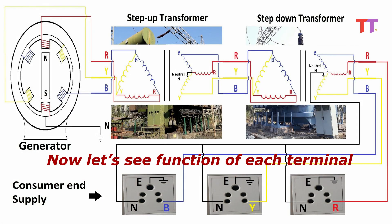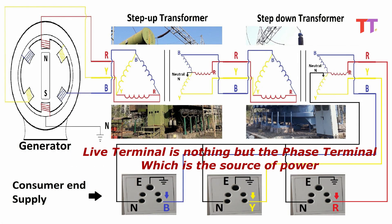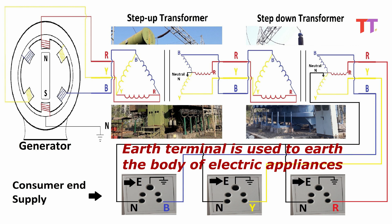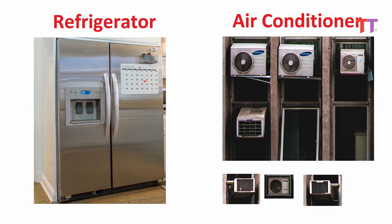Now let's see the function of each terminal. The live terminal is nothing but the phase terminal, which is the source of power. The neutral terminal is used to complete the path for flow of current. The earth terminal is used to earth the body of electric appliances such as refrigerators, air conditioners, etc., so as to pass any current leak into the appliance's body due to insulation failure.